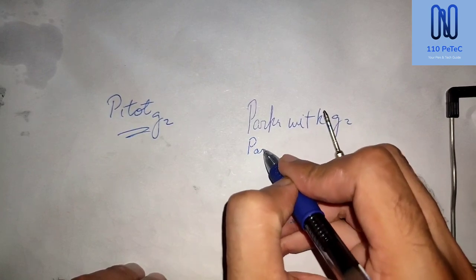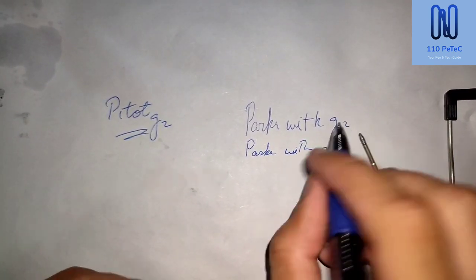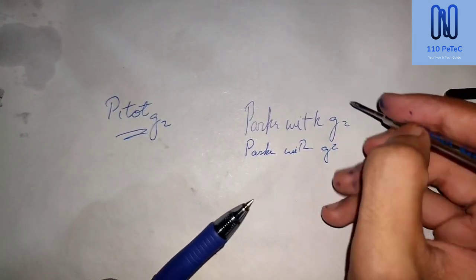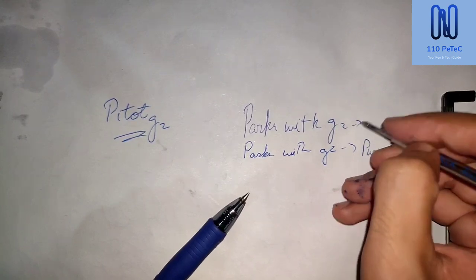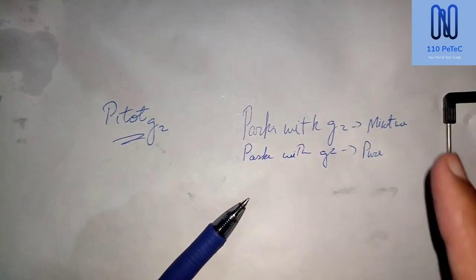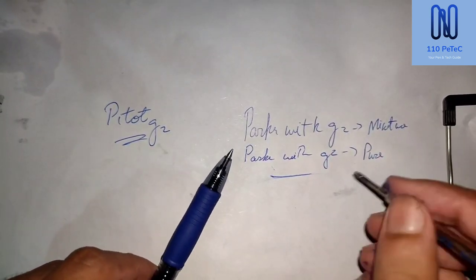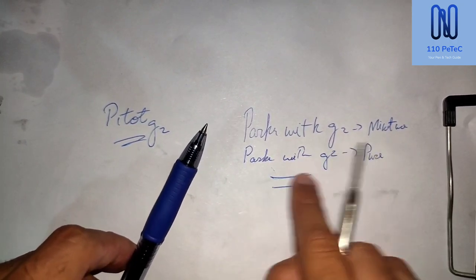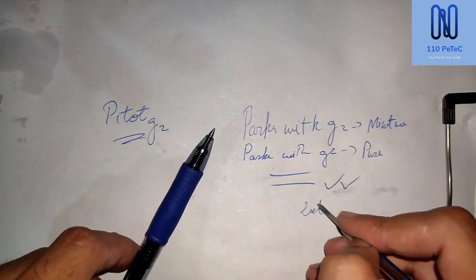But the Parker with Pilot G2 is less dark but more smooth, and it is more fast drying than the pure Pilot G2 ink. I'm showing you a mixture and you'll see that the upper one is much better. This is smudging, this is not smudging. So that's a great combo.